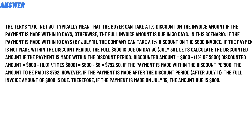The discounted amount is $800 minus 0.01 times $800, which equals $800 minus $8, giving $792. So if payment is made within the discount period, the amount due is $792. However, if payment is made after July 11, the full invoice amount of $800 is due.